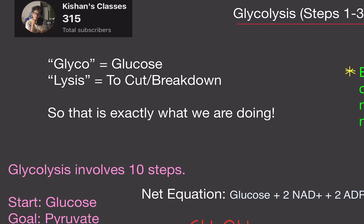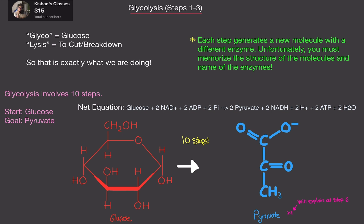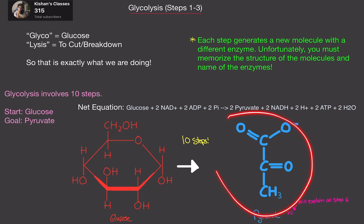Glycolysis. The name comes from glucose and lysis, meaning glucose and to break down — lysis meaning break down. Glycolysis involves 10 steps, and each step generates a different molecule and a different enzyme. We need an enzyme for every step. And unfortunately, yes, you do need to memorize the structure of the molecules and the name of the enzymes. You don't need to know the structure of the enzymes, just the structure of the molecules — the reactants and the products. The whole point of glycolysis is we're starting from glucose and we're ending with pyruvate. That's the end goal, and it takes 10 steps to do that.